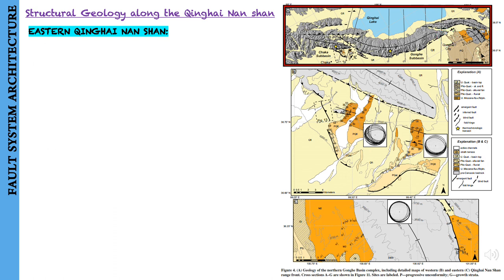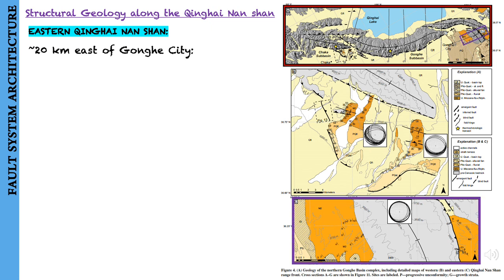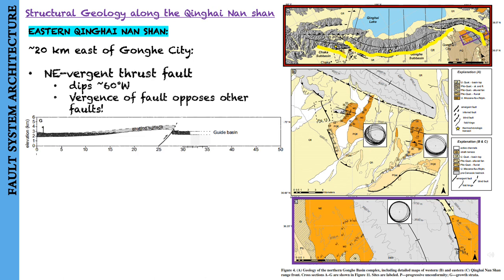Late Cenozoic strata are also well exposed on the flanks of granitic bedrock that outcrops 20 km east of Gonghe city. The range is bound by a northeast-vergent thrust fault along its eastern edge, which dips around 60 degrees west and has a vergence opposite to that of faults bounding much of the Qinghai-Nanshan to the west.